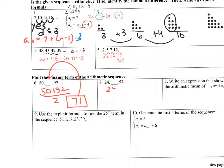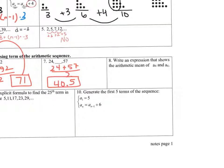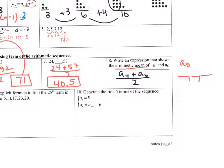Problem 7: Find the arithmetic mean of 24 and 57. Do (24 plus 57) divided by 2, which gives 40.5. Problem 8: Write an expression for the arithmetic mean of the fourth term and the sixth term — meaning we're finding the fifth term. The expression is (a sub 4 plus a sub 6) divided by 2.